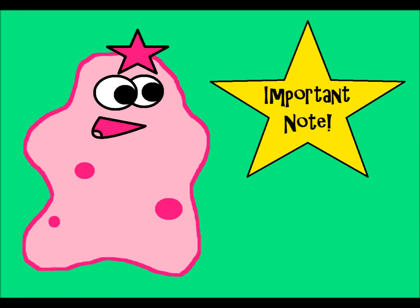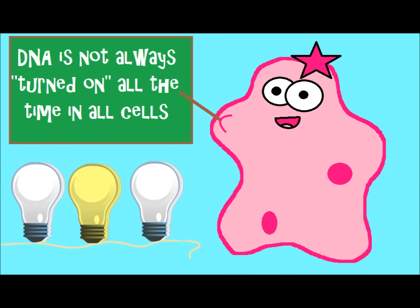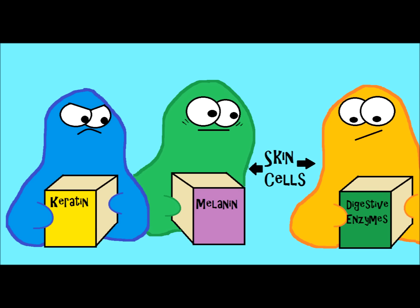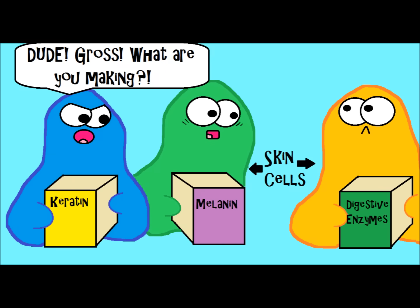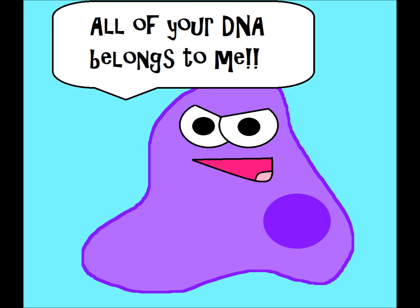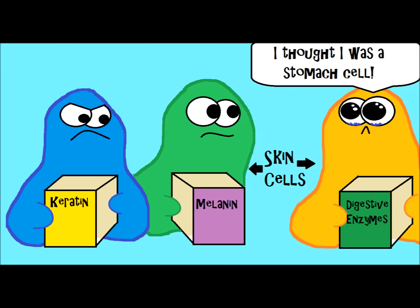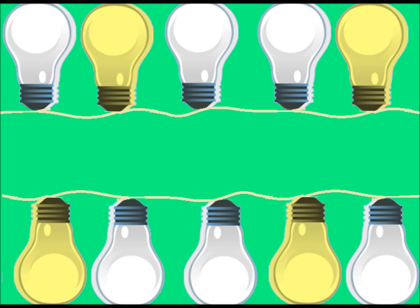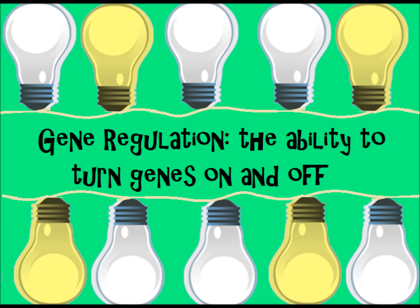Even though all of your cells contain your entire DNA code, that DNA is not turned on all the time in all of your cells. For example, a skin cell is not producing digestive enzymes — that would be nasty. The digestive enzyme code is in the DNA of your skin cells, but it's turned off there, which is a good thing. While in a stomach cell, that would be turned on and activated. We call that gene regulation — the ability to turn genes on and off.